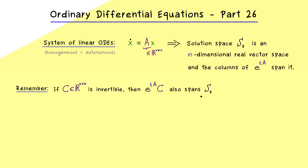We don't need to explicitly calculate the matrix exponential — we just need to know what the columns span. If we multiply our matrix exponential by an invertible matrix C from the right-hand side, we get different combinations of the columns but don't change what they span, so we don't change our solution space S0. It's important that we have an invertible matrix multiplied from the right. This fact is really helpful as we will see with our two-dimensional cases.